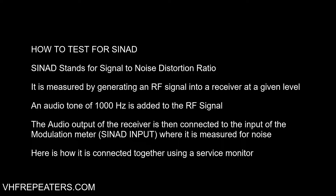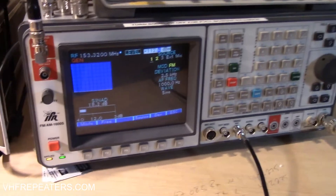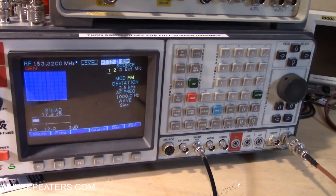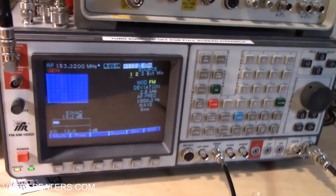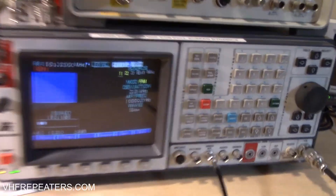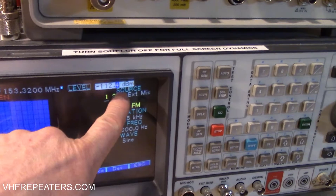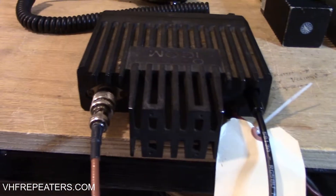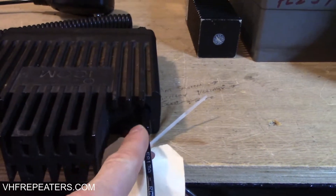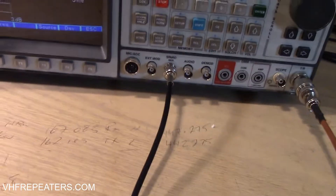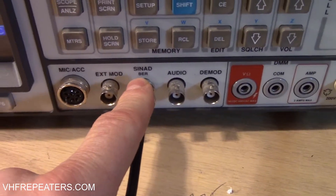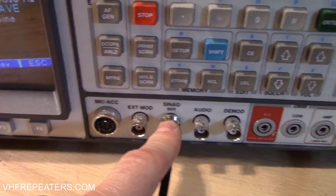Here is how it is connected together using a simple service monitor — in this case an IFR 1600S. We're going to be using the signal generator function today along with the SINAD function, which is the SINAD input right down here. It is a very simple test. What we're doing is we're generating an RF signal at a designated level into the back of the receiver. We have the RF going in, and over here we've got the AF coming out of the back of the speaker jack, and the AF line runs back into the SINAD input of the comm monitor. This is essentially a modulation meter.